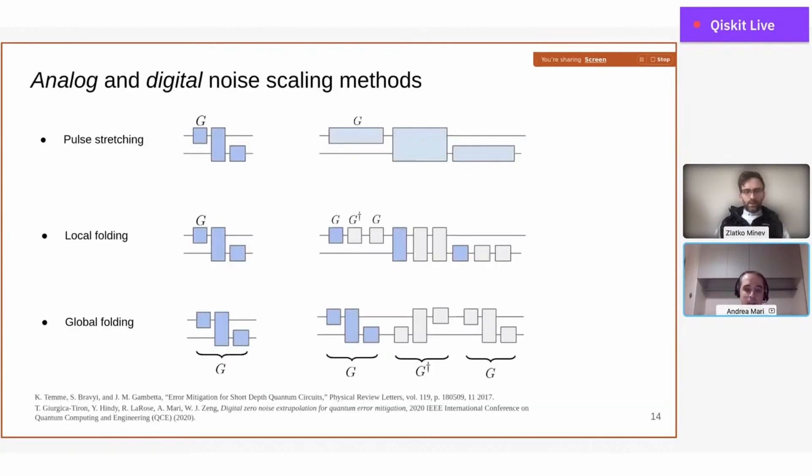Just to take a couple questions on local versus global folding. With global folding, you have G dagger G as the identity, and you are left with your original circuit. Can you say a little bit more on how important is the way in which you scale between these? They're probably not going to lead to the same type of effective lambdas and scaling as if you were stretching the gates.